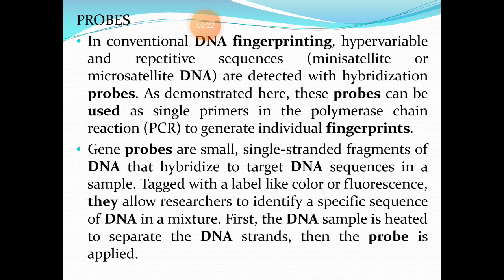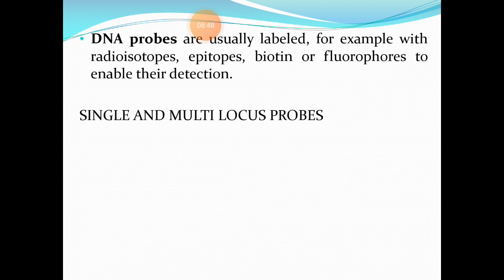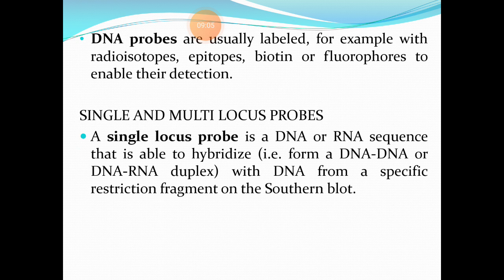Gene probes are tagged with a label like color or fluorescence, which allows researchers to identify a specific sequence of DNA in a mixture. First, the DNA sample is heated to separate the DNA strands, and then the probe is applied. DNA probes are usually labeled with radioisotopes, epitopes, biotin molecules, or fluorophores to enable easy detection.